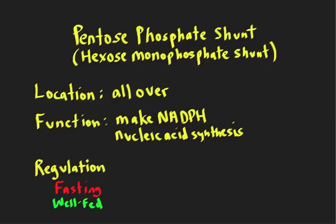After watching this video, you should be able to describe the pentose phosphate shunt, also known as the hexose monophosphate shunt. Be able to list some general locations of where you find this reaction, some functions, particularly the production of NADPH and nucleic acids, and describe some of the regulation in the liver, particularly in response to fasting and the well-fed state.